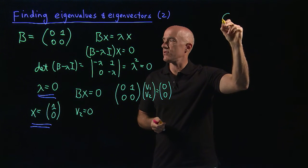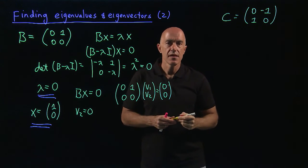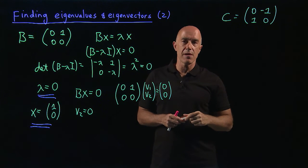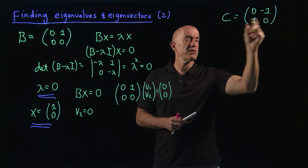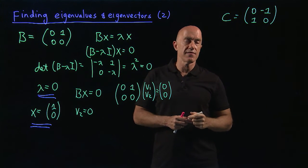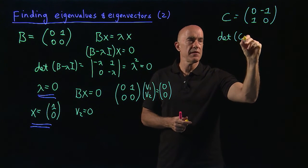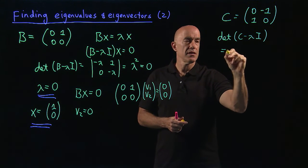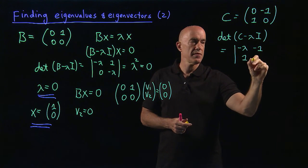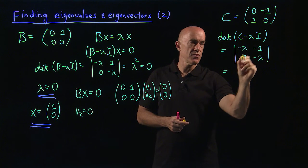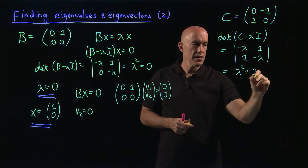Now let's look at the matrix C = [[0, -1], [1, 0]]. This is a skew-symmetric matrix — recall that a skew-symmetric matrix satisfies C transpose equals minus C. This matrix does not have real eigenvalues. Computing the determinant of C minus lambda I, we subtract lambda from the diagonal to get [[-lambda, -1], [1, -lambda]], and the determinant equals lambda squared minus (-1), which gives lambda squared plus 1 equals 0.